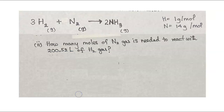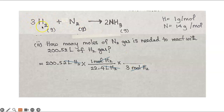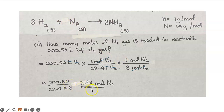Part two: how many moles of nitrogen gas are needed to react with 200.52 liters of H2 gas? Start with the given value, cancel liters of hydrogen using 22.4 liters equals one mole of H2, then apply the mole-mole ratio — hydrogen is 3 and nitrogen is 1. Cancel hydrogen moles and calculate the answer. This is just like before, just using a different factor.